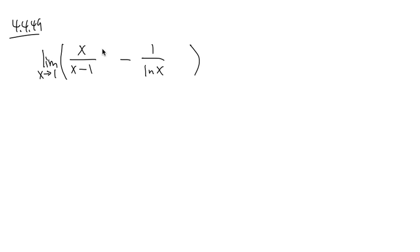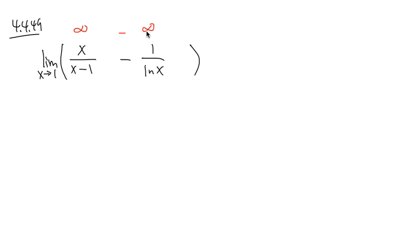This is a slightly tricky question, but we will follow our strategy. First, plug in 1 into all the x. For the first part, I will end up with 1 over (1 minus 1), which is 1 over 0 — infinity. And if you plug in 1 into ln x, you get 1 over ln 1. ln 1 is equal to 0, so here we have 1 over 0, which is also infinity. So this is the indeterminate form infinity minus infinity.